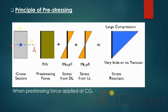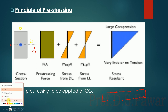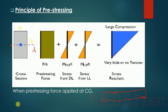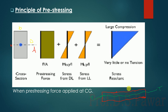The beam we are dealing with here — we have seen its cross section. If you look at the longitudinal section of the beam, it is like this. In this beam, if you provide the tendon at the CG of the beam, this is the tendon.